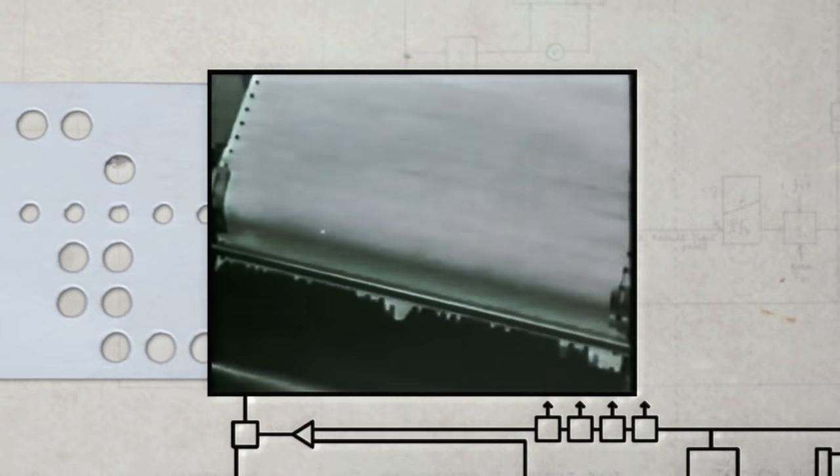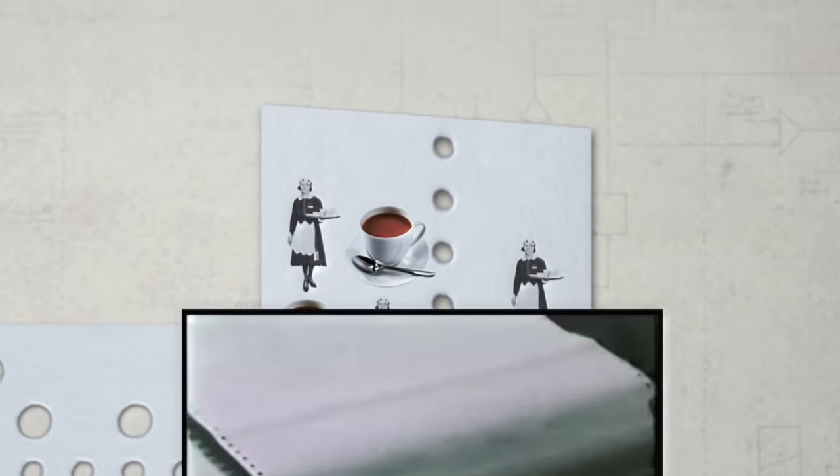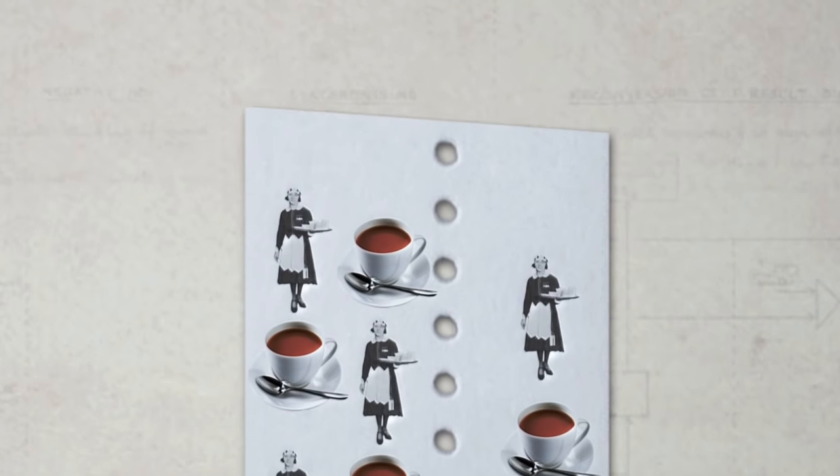But the genius of Leo is that it's not fussy about its input. It can process just about anything, from tea blends to payroll. Calculating a payslip used to take eight minutes. Now it takes 1.5 seconds.